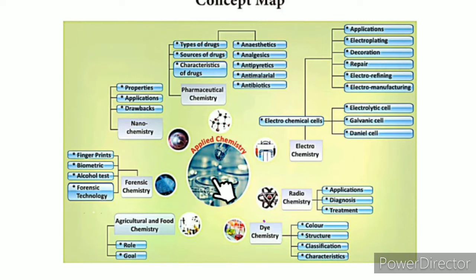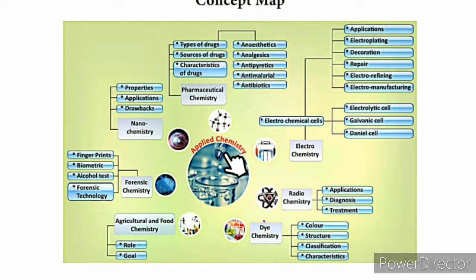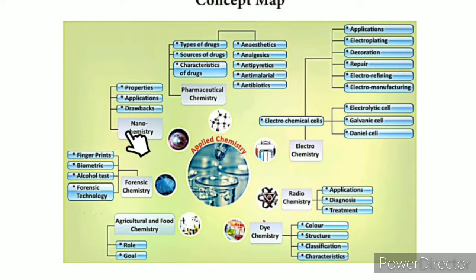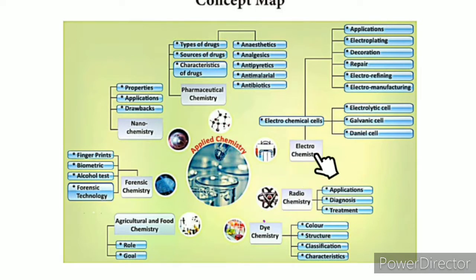Chemistry is used in day-to-day life. The most important thing is applied chemistry, which covers 7 to 8 various fields. The first part is nanochemistry, the second part is pharmaceutical chemistry, and the third part is electrochemistry. The fourth part is radiochemistry.